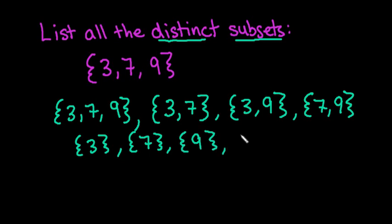And we always have to include the empty set. The empty set is always considered a subset of the original set because the empty set does not include any of these numbers, which is always a possibility when you're listing subsets.